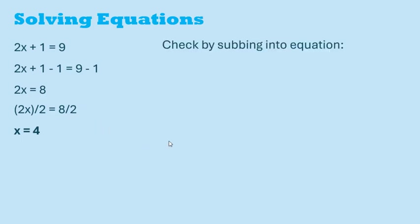We can check our work by subbing in 4 in place of x into the original equation. 2 times 4 is 8, plus 1 gives us 9. So we have left side equals right side because both sides are equal to the same thing. This shows that the solution x equals 4 is correct.